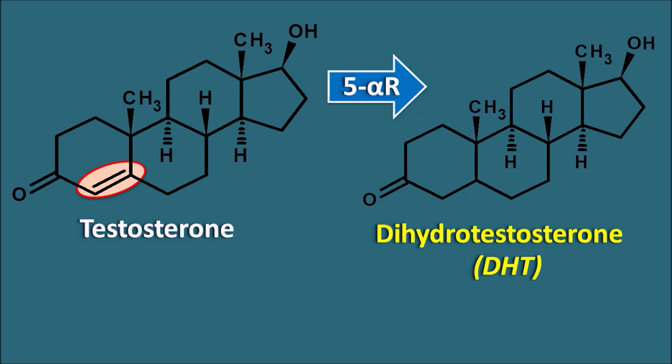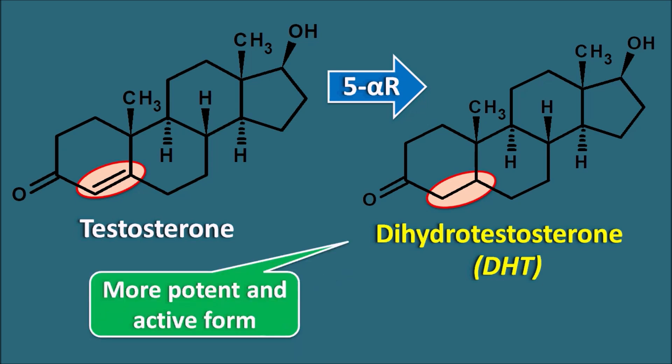At the fourth and fifth position of DHT, there is saturation. This DHT is the more potent and active form of testosterone. This enzyme is blocked by dutasteride, thereby inhibiting the activity of testosterone. In order to act on this enzyme, dutasteride should also have some structural similarity.